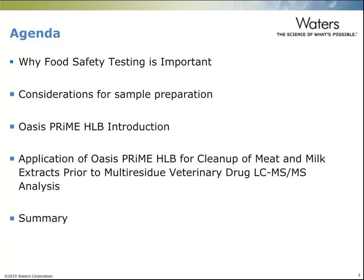Today's agenda is as follows. First, we're going to discuss why food safety testing is important, and then what are the considerations for sample preparation. Following that, we will introduce the new sorbent called Oasis Prime HLB, demonstrate what it is, and show a few application examples of using Prime HLB for the cleanup of meat and milk extracts before LC-MS/MS analysis. Finally, we'll give a brief summary.